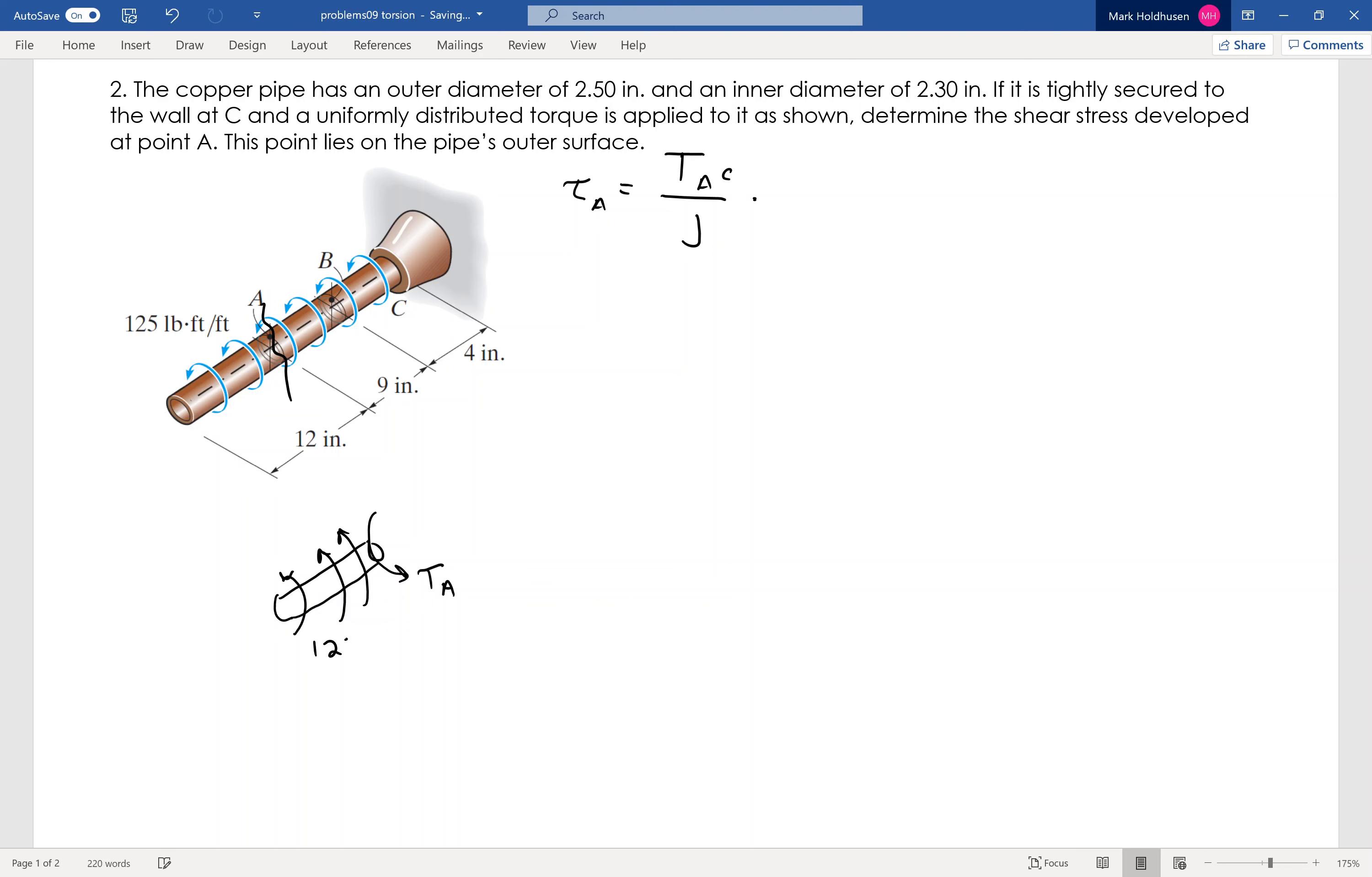And you have the distributed load of 125 foot-pounds per foot. So that torque has to equal all of that added up there, which is going to be 125 foot-pounds per foot times one foot.